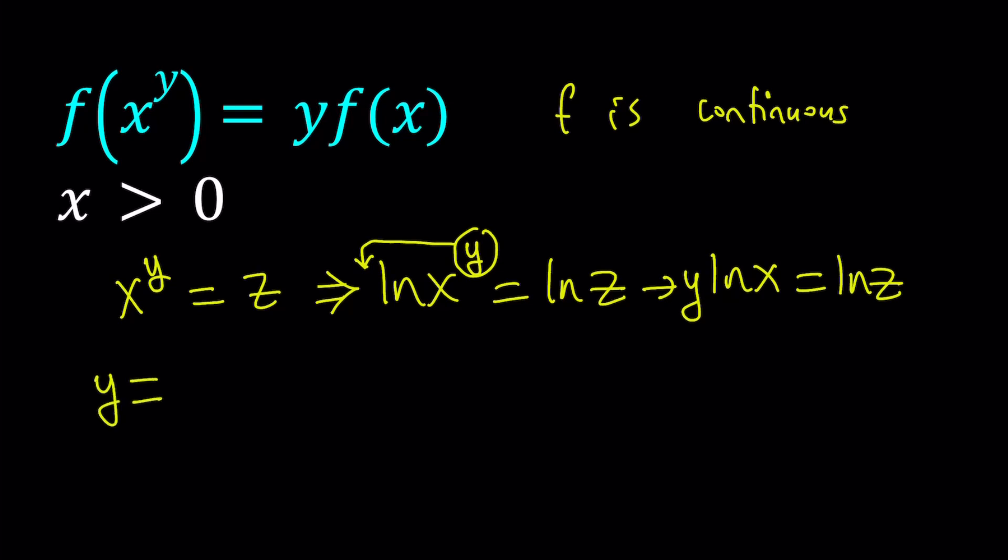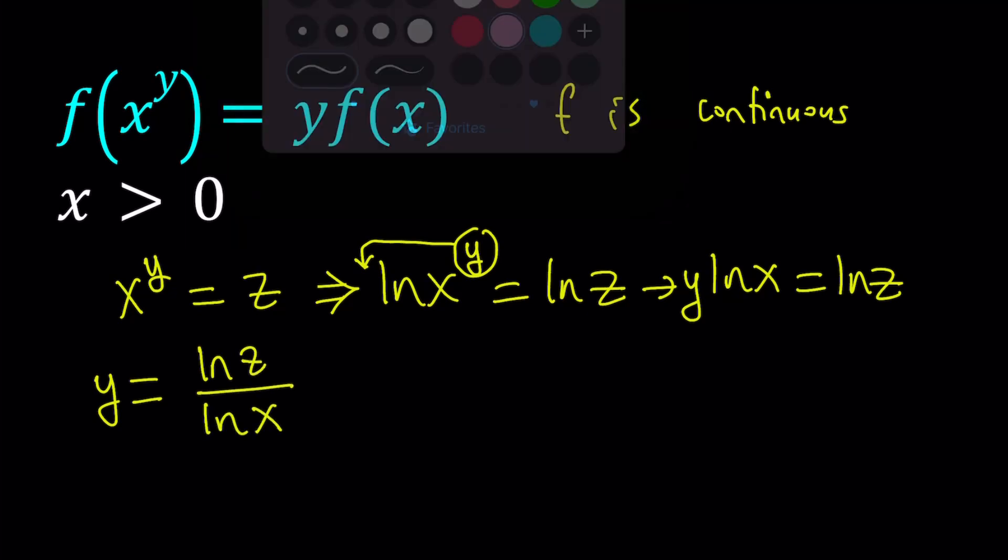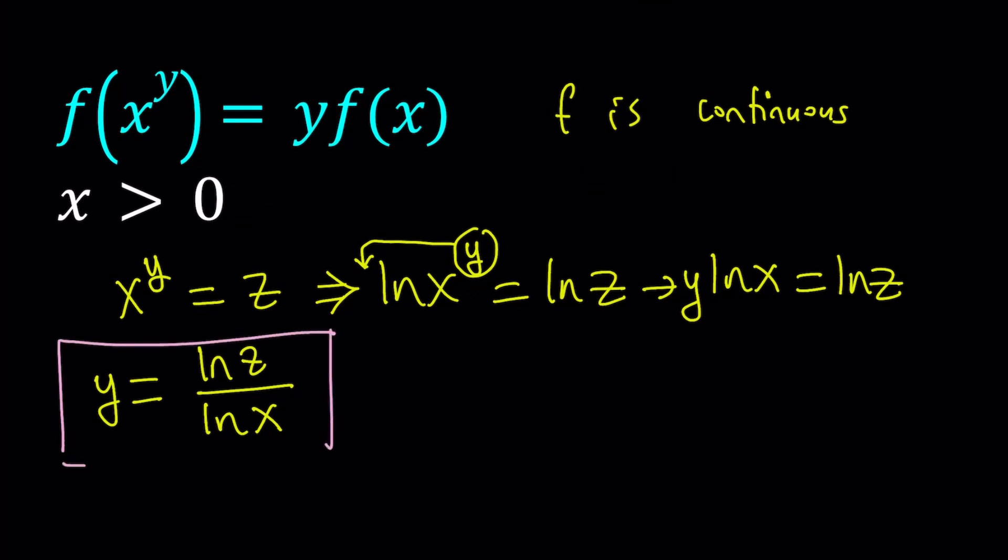Isolate y and write it as ln z over ln x. This is my y value and I'm going to use it in the original expression.